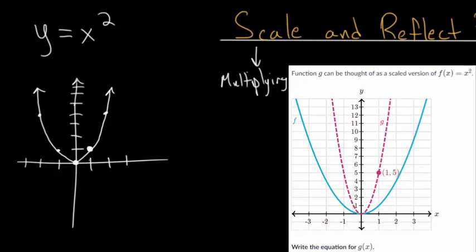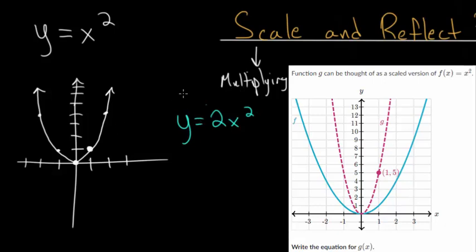Now with scaling and reflecting, we're essentially going to look at three different cases. Let's first think about the case where we multiply on the outside. We're going to multiply x squared by some number bigger than 1 — that will be case number 1. So let's say we have 2x squared. We want to think: what happens to our parent function when we multiply everything by 2?